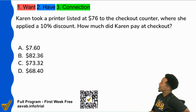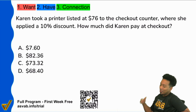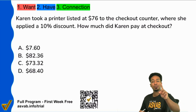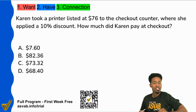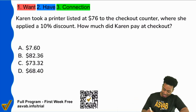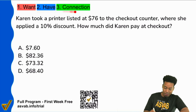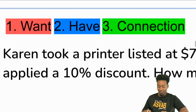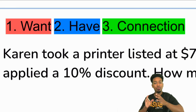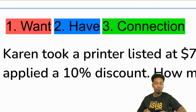Step number one in every single word problem: read the question sentence. Go straight to what you want. These three steps are not here for no reason: what do you want, what do you have, what's the connection? Those are the three steps to word problem success.